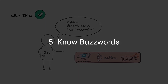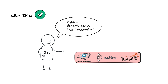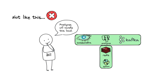Bob loved to use buzzwords in the interview, so he missed many important design details. But Bill loved proven technologies and had a broad knowledge of alternative technologies, so he knew when to use what. His knowledge was T-shaped, and it helped him justify design decisions.